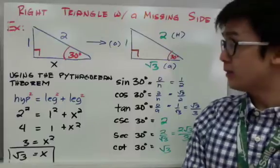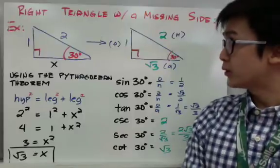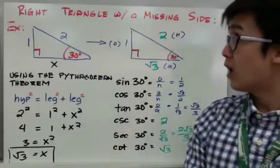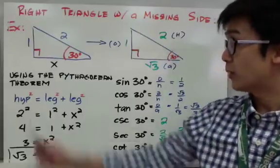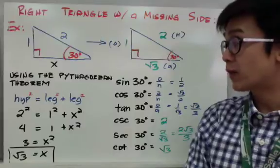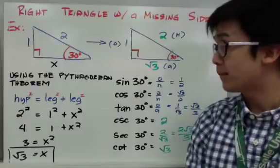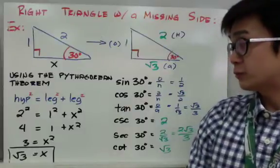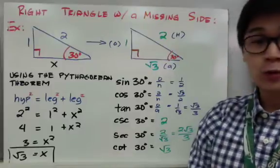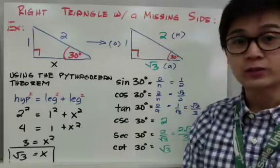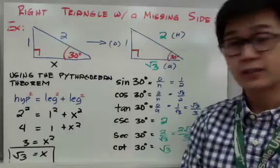The Pythagorean theorem, if you can remember, is: hypotenuse squared equals leg squared plus leg squared. The given sides in this problem are the hypotenuse and one leg, which is 1. By substituting into the formula, we have 2 squared equals 1 squared plus x squared. Solving for x, we subtract 1 from both sides to get 3 equals x squared, then take the square root of both sides, so x equals the square root of 3.